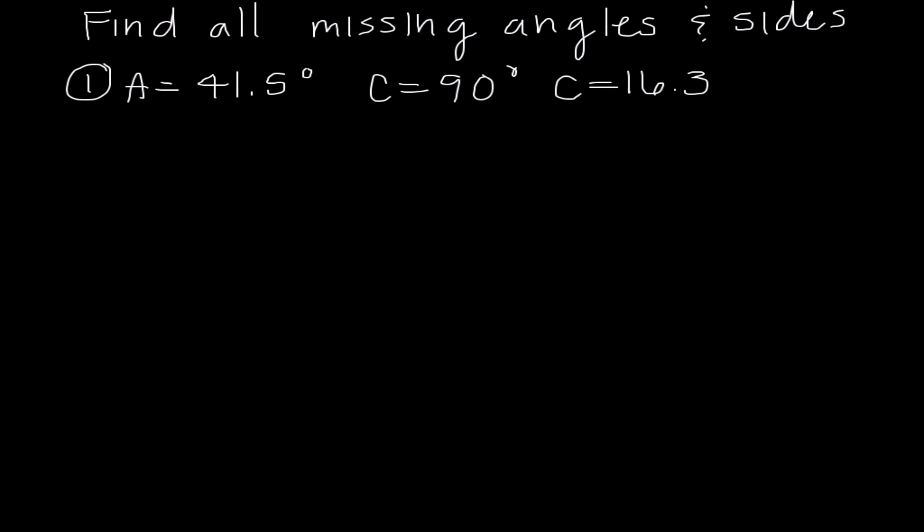Here's number one. It's asking us to find all the missing sides and angles. The very first thing that I'm going to do is sketch out a picture. This is just going to help me when determining which trig functions to use. I know this is angle C, it's 90 degrees. Angle A is up here, so that's 41.5, which means this is side A, side B, angle B, and I know that the hypotenuse is 16.3.